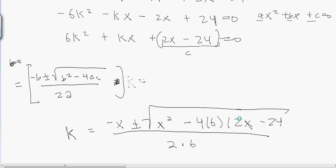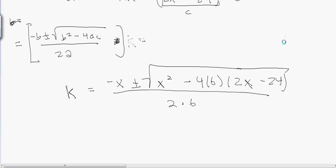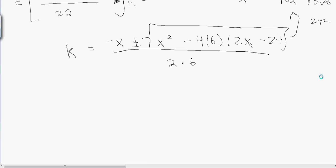Now when you simplify this whole thing, believe it or not, when you distribute everything, you actually get x² - 48x + 576. And if you were careful, you can see that 576 is actually 24². This is actually a perfect square trinomial.